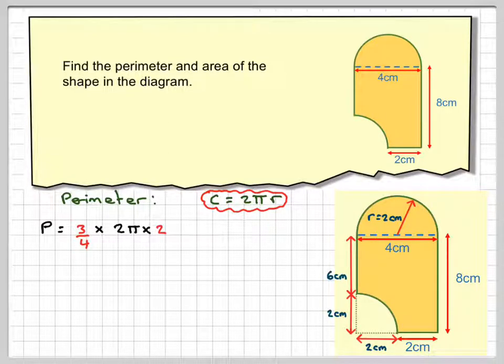So the perimeter will be... Now, what we've got here is we've got this bit here and this bit here, so that's 3 quarters of the same circle, so it's going to be 3/4 × 2π × 2, plus 6, plus 8, plus 2.